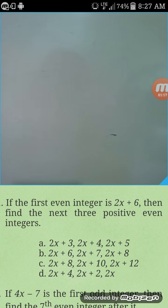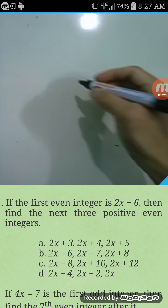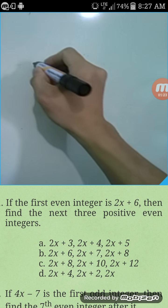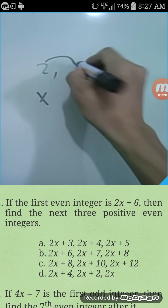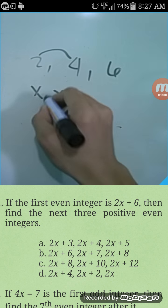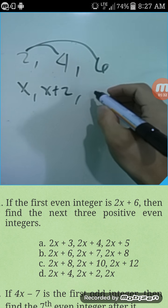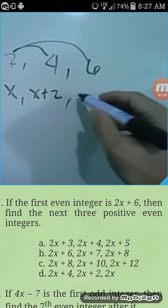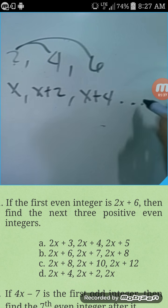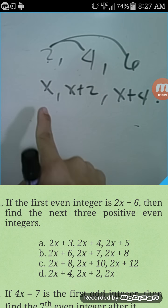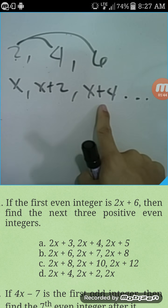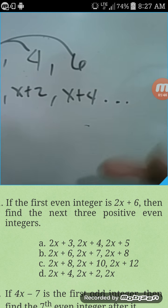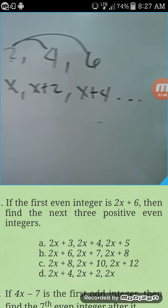If you are given consecutive even integers, like 2, 4, 6 — the first is x, the second is x plus 2, the third is x plus 4, because we're adding 2 each time. So for even integers: first is x, second is x plus 2, third is x plus 4, and so on — x plus 6, x plus 8, x plus 10.